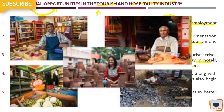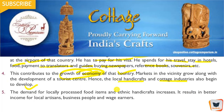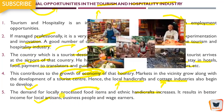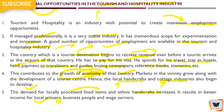Hence local handicrafts and cotton industries also begin to develop. People who come from outside like to have local handicrafts — those that are made by hand. So there is cottage industry — cotton grows a lot in Maharashtra — so cottage industry also gets a big boost. The demand for locally processed food items and ethnic handmade crafts increases. It results in better income for local artisans — the local artisans who do handwork get a lot of demand — business people and wage earners also benefit.